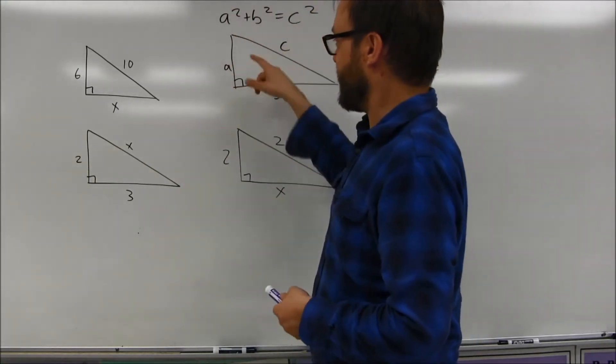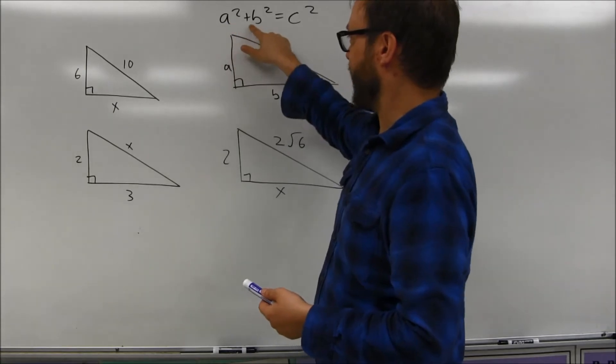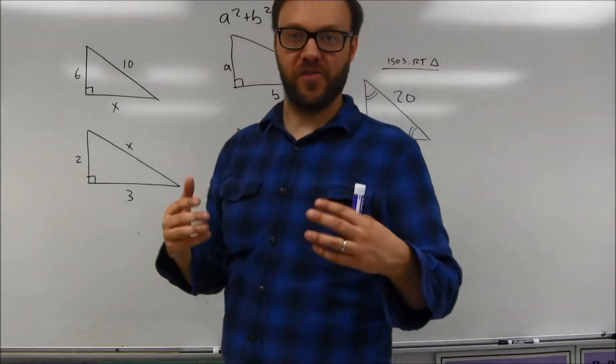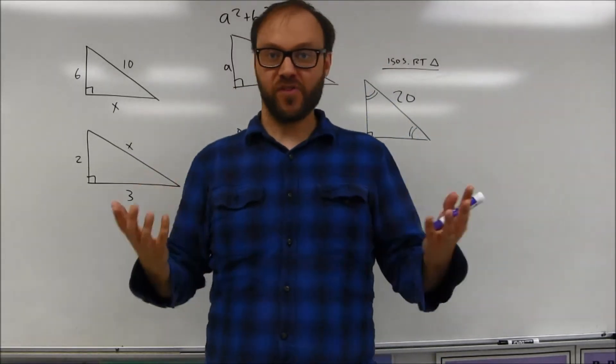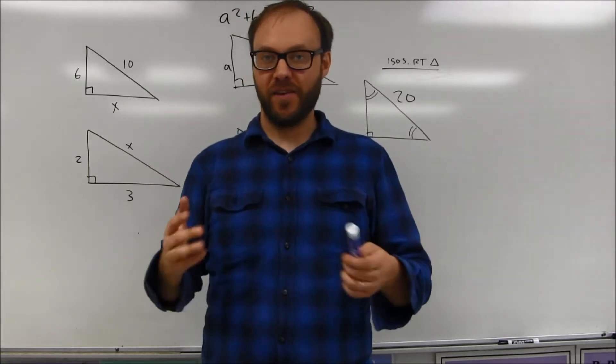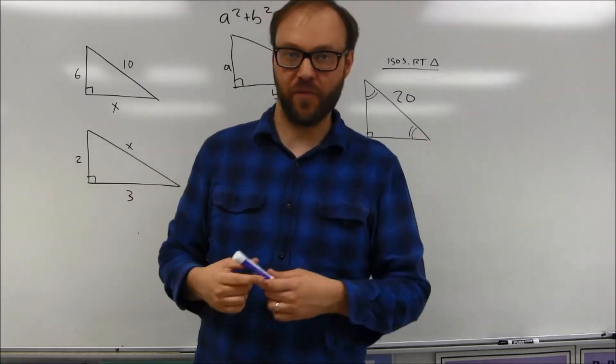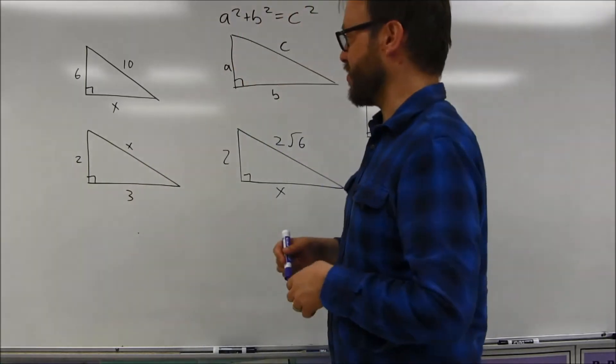But the Pythagorean Theorem says if you take a leg squared and you add the other leg squared, you get the hypotenuse squared. And the formula is relatively simple, not nearly as complicated as say the quadratic formula, and it's pretty nice to work with.